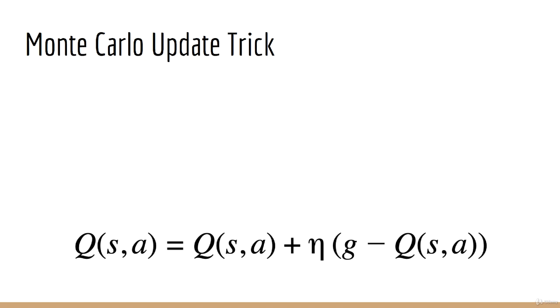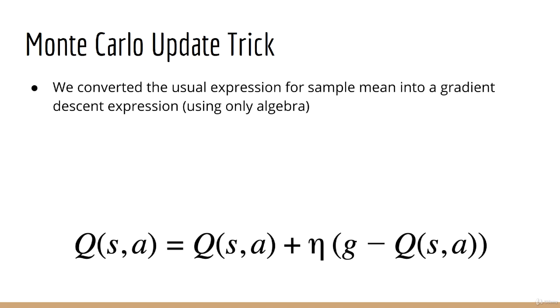Recall this one neat trick with Monte Carlo methods. When we're updating q or v, which is the sample mean of all the samples we've collected, we don't have to express the update as a sample mean. That would mean we have to keep all the samples around, which can take up lots of memory and take lots of time to calculate.